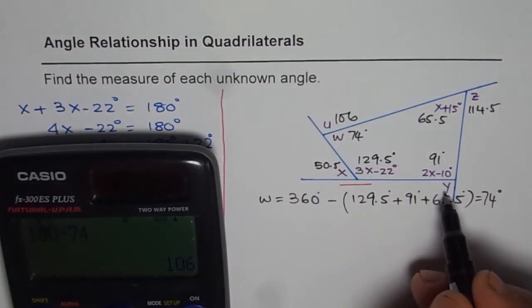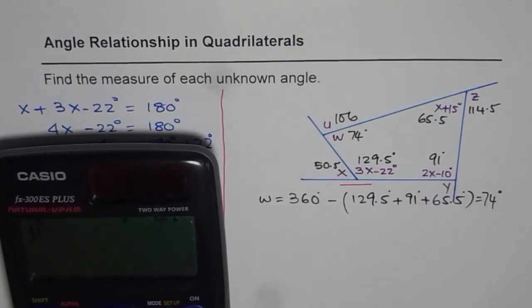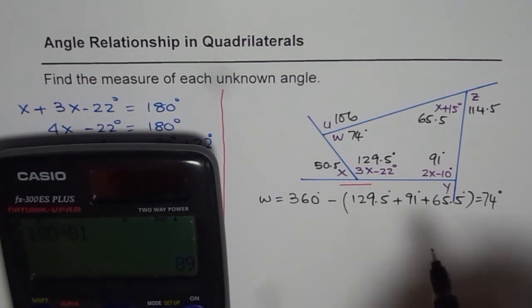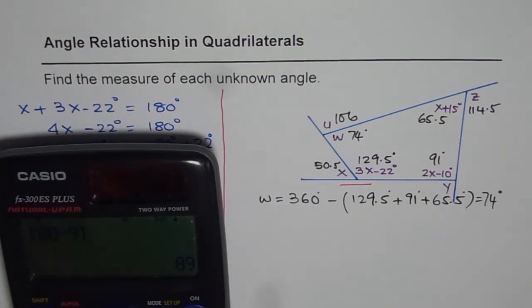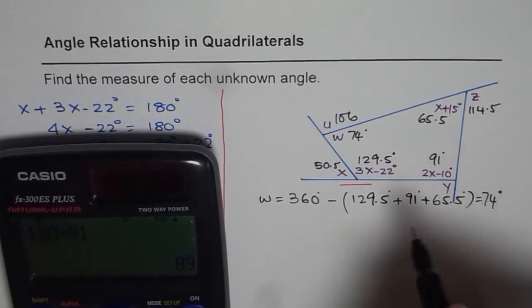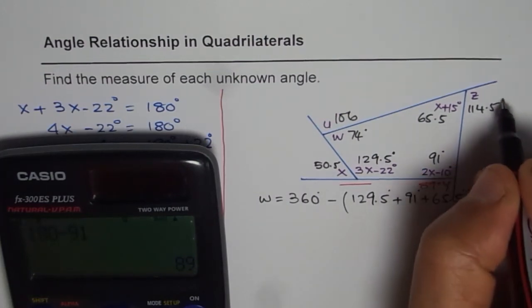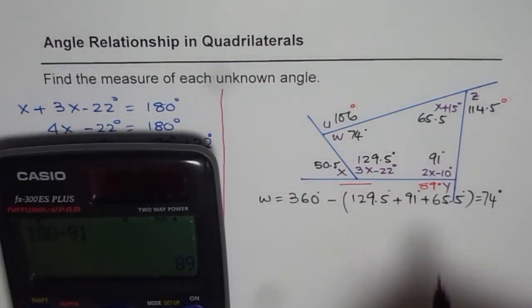This Y will be 180 minus 91. So 180 minus 91 will give you 89 degrees. So I'll write this in a different ink here. 89 degrees. So likewise, you can write all the angles.